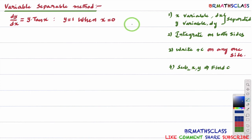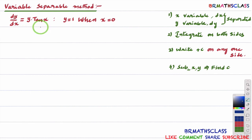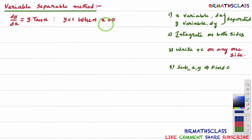In examination, the question they'll ask like this: Find the particular solution of the differential equation dy/dx equal to y into tan x. Whenever they ask for a particular solution, they'll mention the values of x and y. Here, they have given that y equal to 1 when x equal to 0.